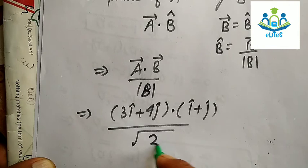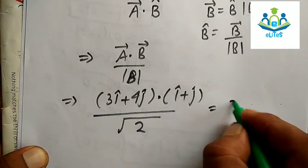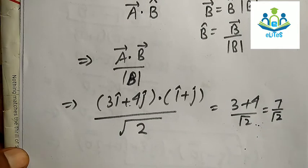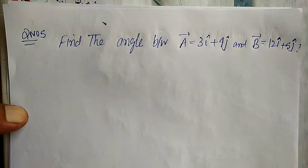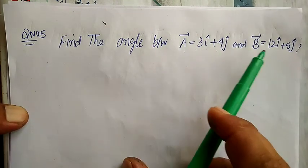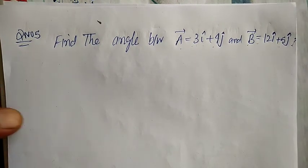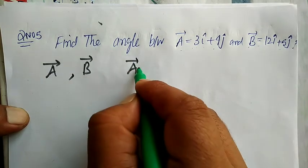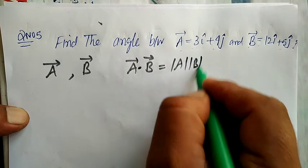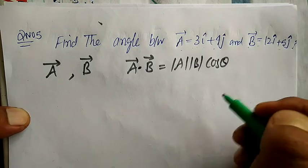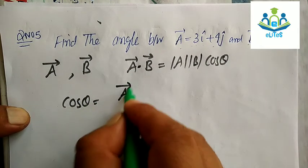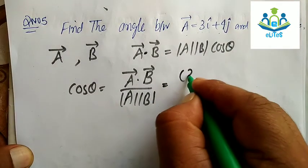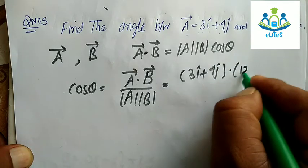The unit vector b̂ = (i + j) / √(1+1) = (i + j) / √2. We also use the relation: a · b = |a||b| cos θ, so cos θ = (a · b) / (|a| |b|). Here a = 3i + 4j and we compute the dot product.